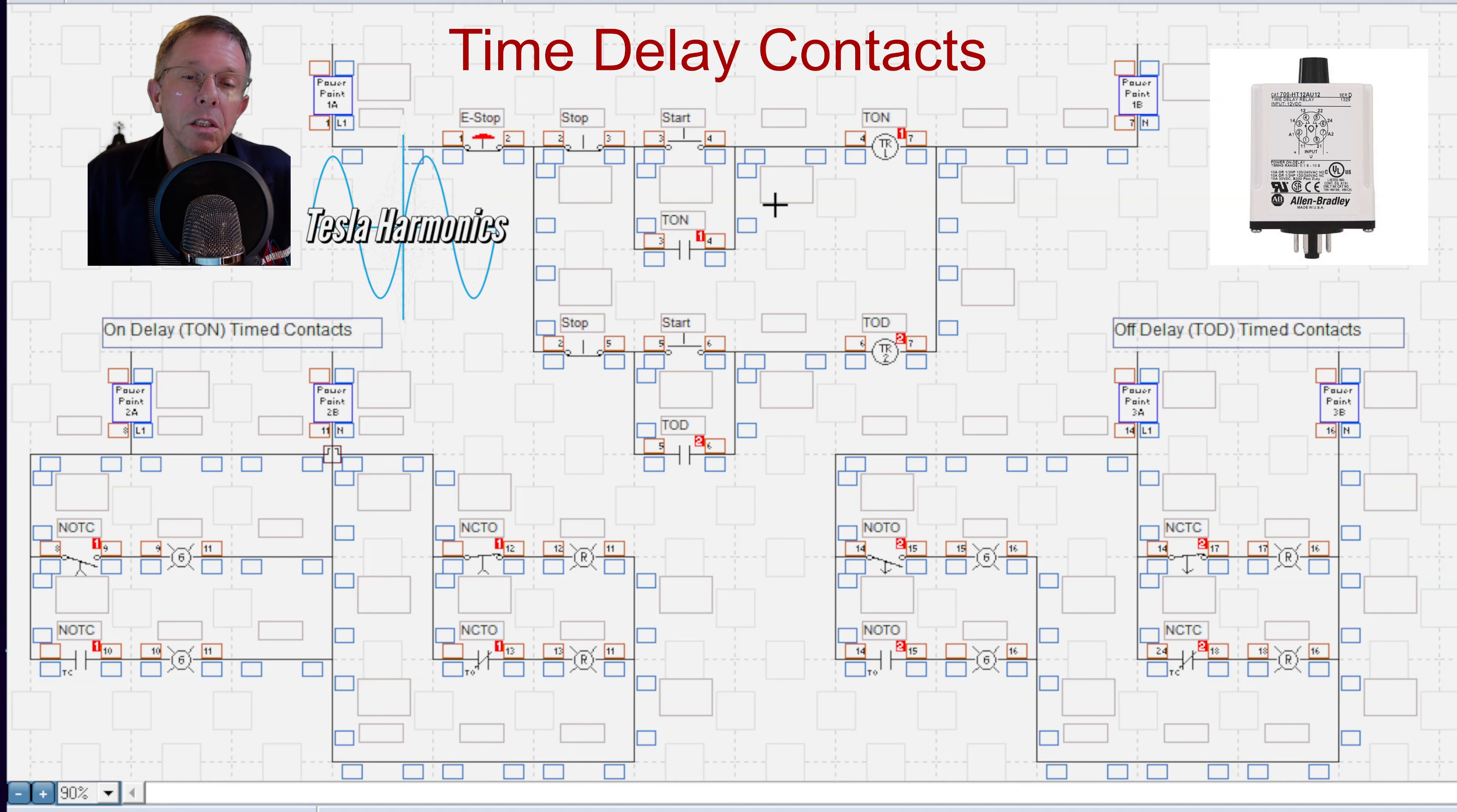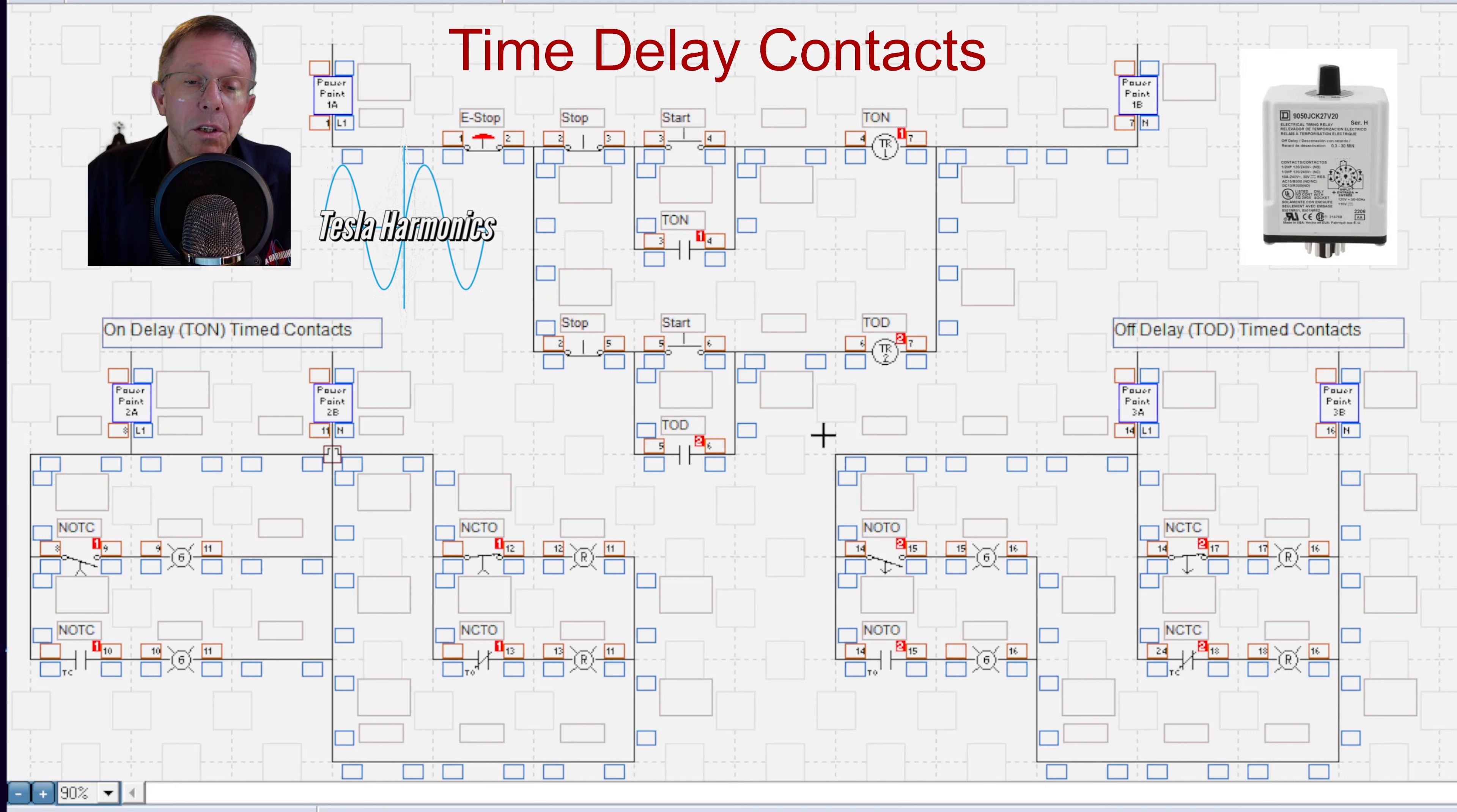one three-wire start-stop circuit that is controlling a time on relay, and then another start-stop circuit is controlling a time off delay relay. Okay, so the first one I want to look at is the time on relay and we'll do that right now.